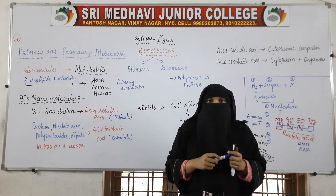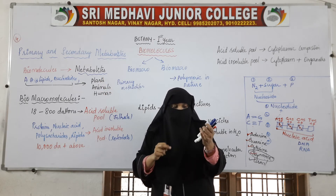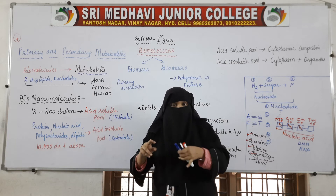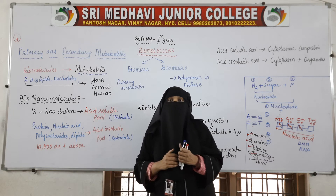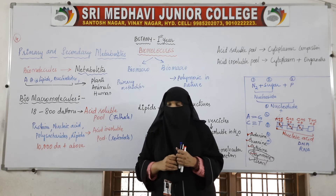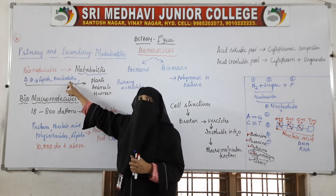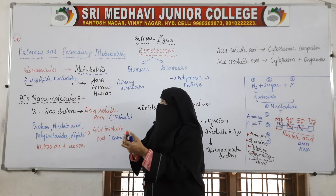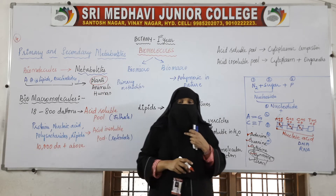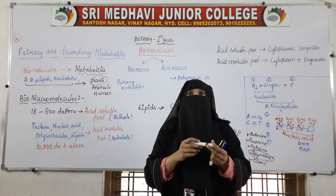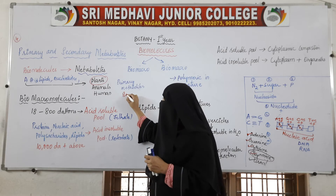But in plants, apart from these primary metabolites — amino acids, lipids, nucleotides, sugars — plants also have other biomolecules. These extra compounds present in plants are called secondary metabolites.